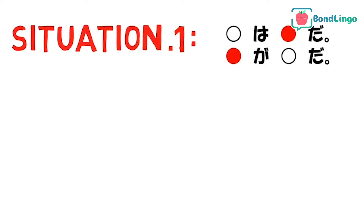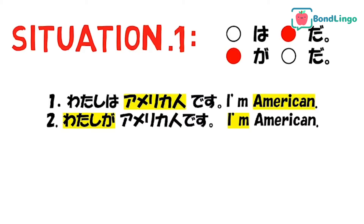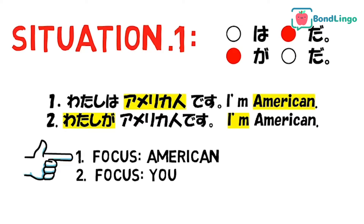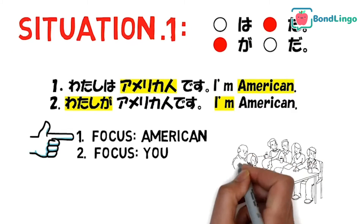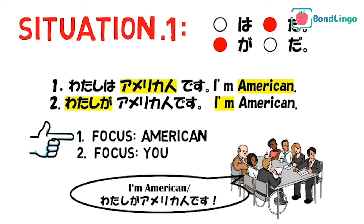For example, the rule can apply to these sentences. The first sentence simply tells that I'm American, because the focus of the sentence is not 'you' but 'American.' On the other hand, the second sentence is used in a situation where you want to emphasize that you are American. For example, a group of seven exchange students from seven different countries sitting in a room, and the teacher asks, 'Who is American?' You will say 私がアメリカ人です, because in this situation, アメリカ人 applies exclusively to you, and the focus point of the sentence is not American but you.